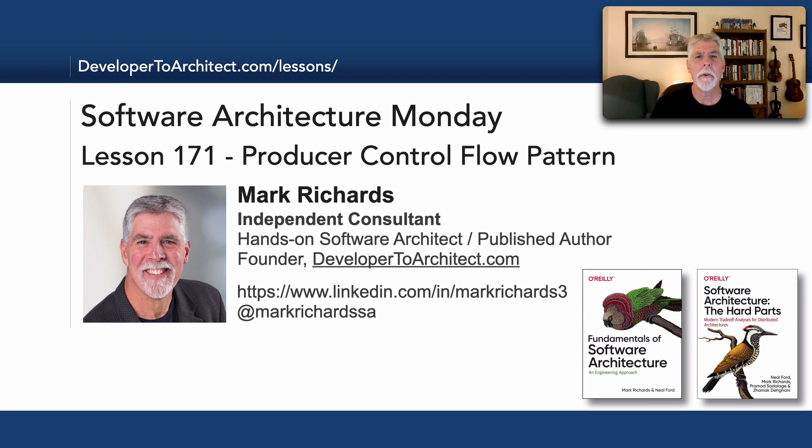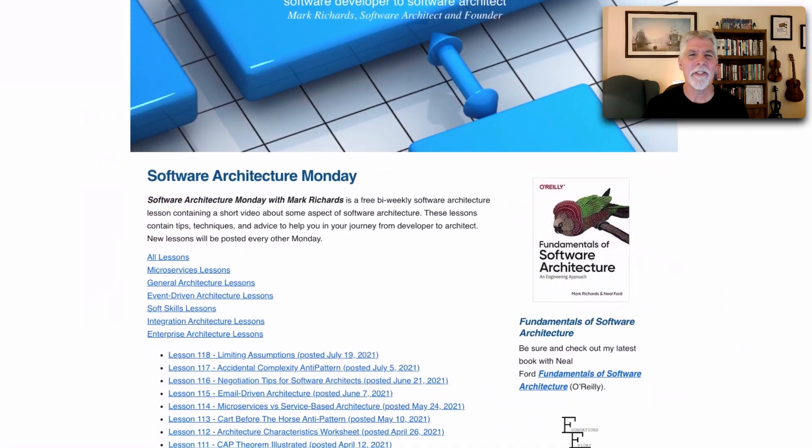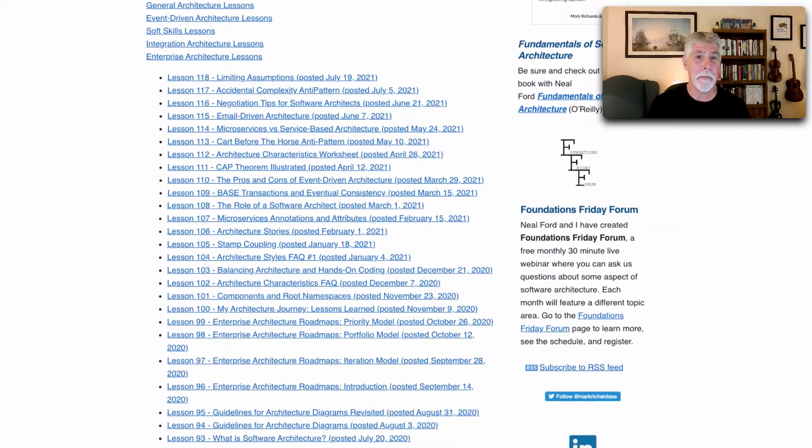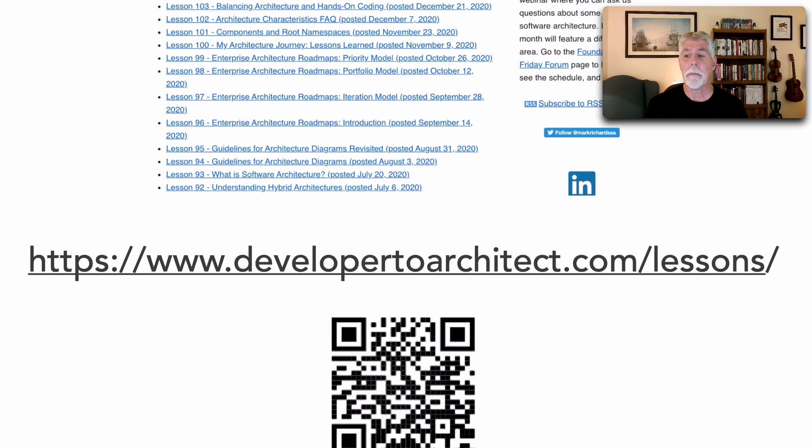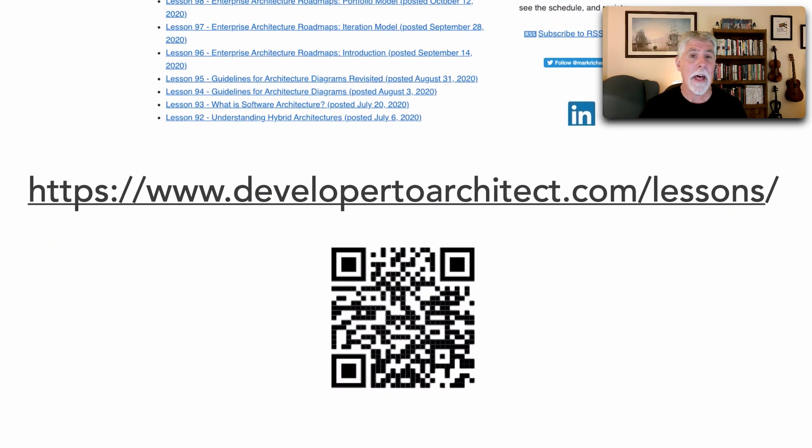Hello everyone and welcome to Software Architecture Monday. My name is Mark Richards. In this lesson we'll take a look at a pattern of reactive architecture called the producer control flow pattern. You can get a listing of all the lessons I do in Software Architecture Monday at my website developer2architect.com slash lessons.